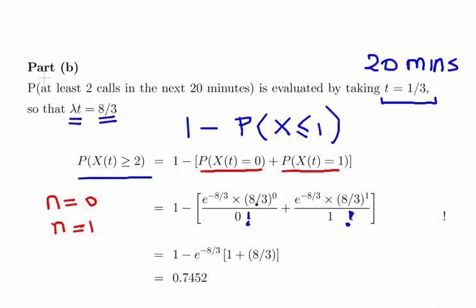8 over 3 to the power of 0 is equal to 1. 0 factorial is also equal to 1, so we end up really there with e to the minus 8 over 3. For the second case, probability of x equal to 1, e to the minus 8 over 3 times 8 over 3 to the power of 1 over 1 factorial, so 1 factorial is equal to 1, 8 over 3 to the power of 1 is 8 over 3.